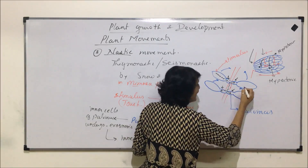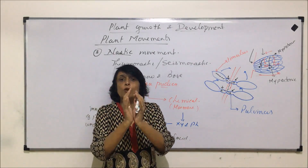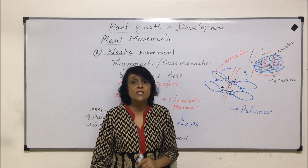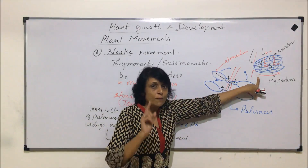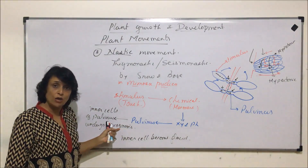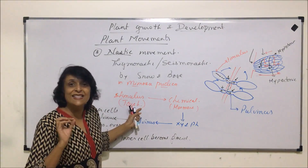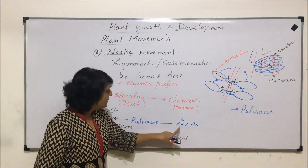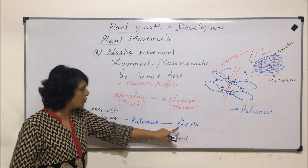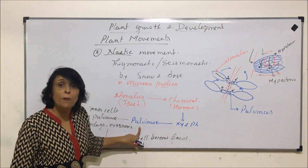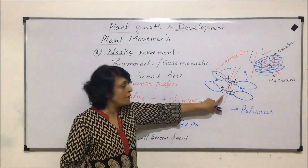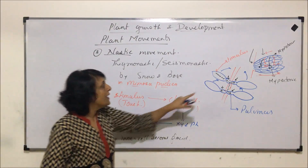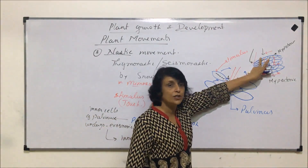These two leaves move towards the inner side, coming closer to each other — that is the seismonastic or thigmonastic movement seen in the touch-me-not plant. To summarize: stimulus is touch; as soon as any part of the plant is touched, a chemical is produced and transported through conducting tissue — xylem and phloem — to the pulvinus, the swollen base of the leaf in Mimosa.